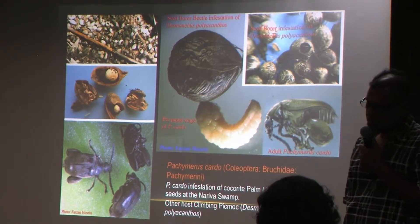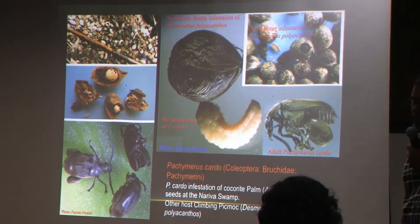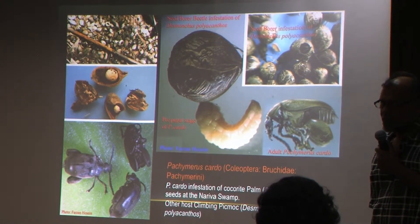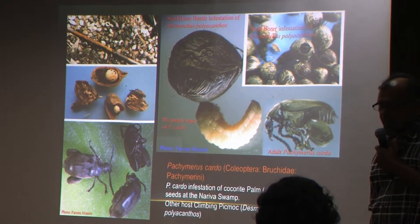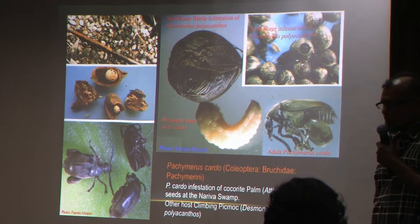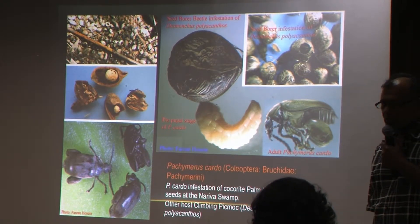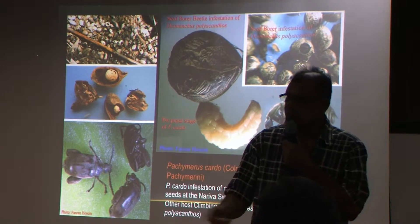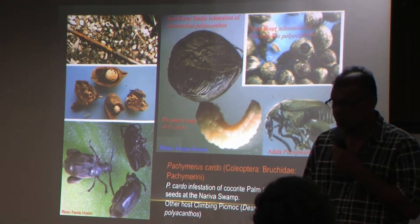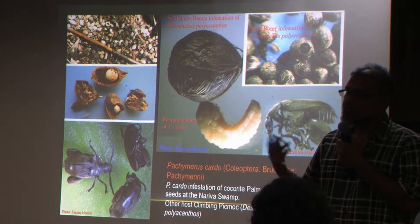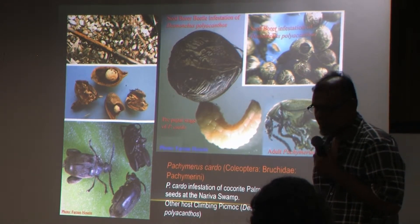There are also other pests that attack the palms, especially the seeds. We have the Kokoreet and the Desmoncus — the seeds are being affected mainly by Pachymerus, which normally feeds on the seeds. These are very important in the survival and rejuvenation of the palm species within the Nariva Swamp.